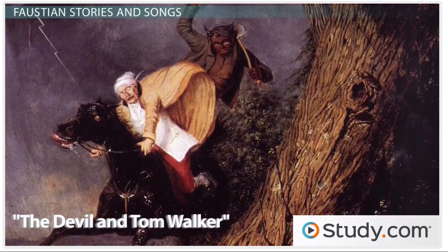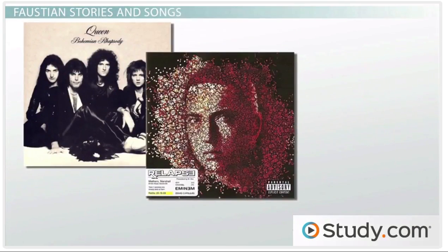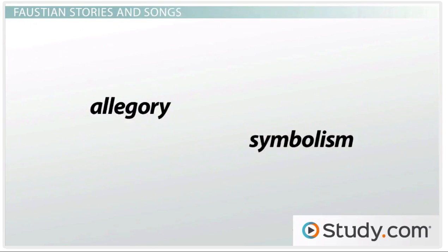This motif has made its way into contemporary culture through songs like Queen's Bohemian Rhapsody, and very obviously into Charlie Daniels' band's The Devil Went Down to Georgia. Irving creates a similar experience for Tom Walker through the use of allegory and symbolism.